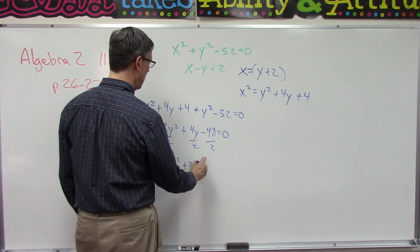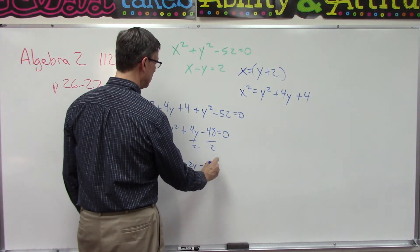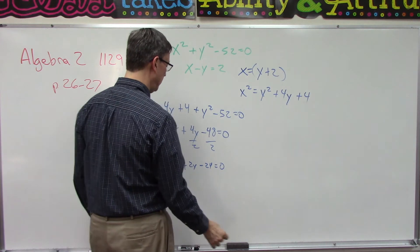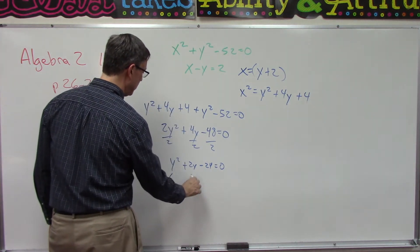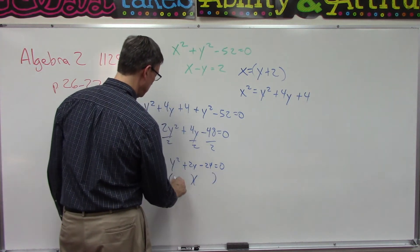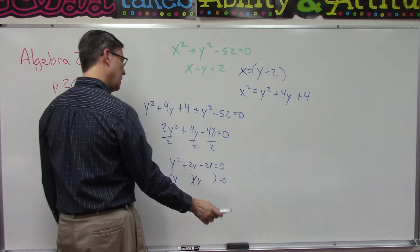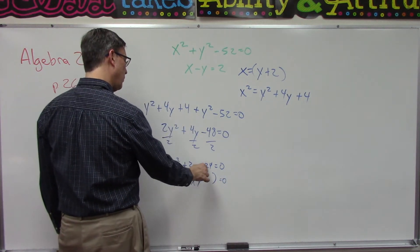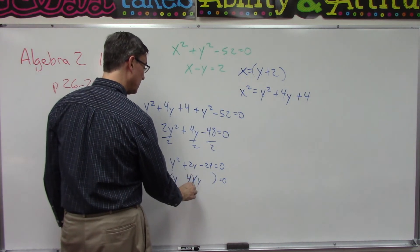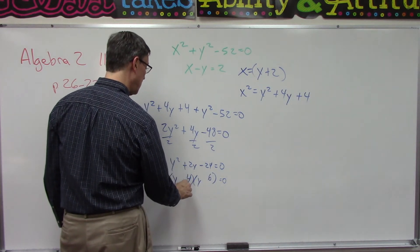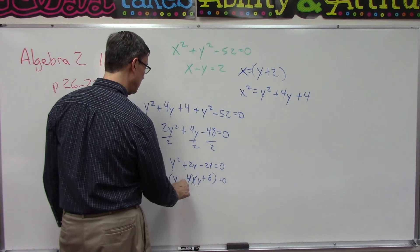That will give me y squared plus 2y minus 24 equals zero. And now we can solve for y. Two parentheses, so y times y.